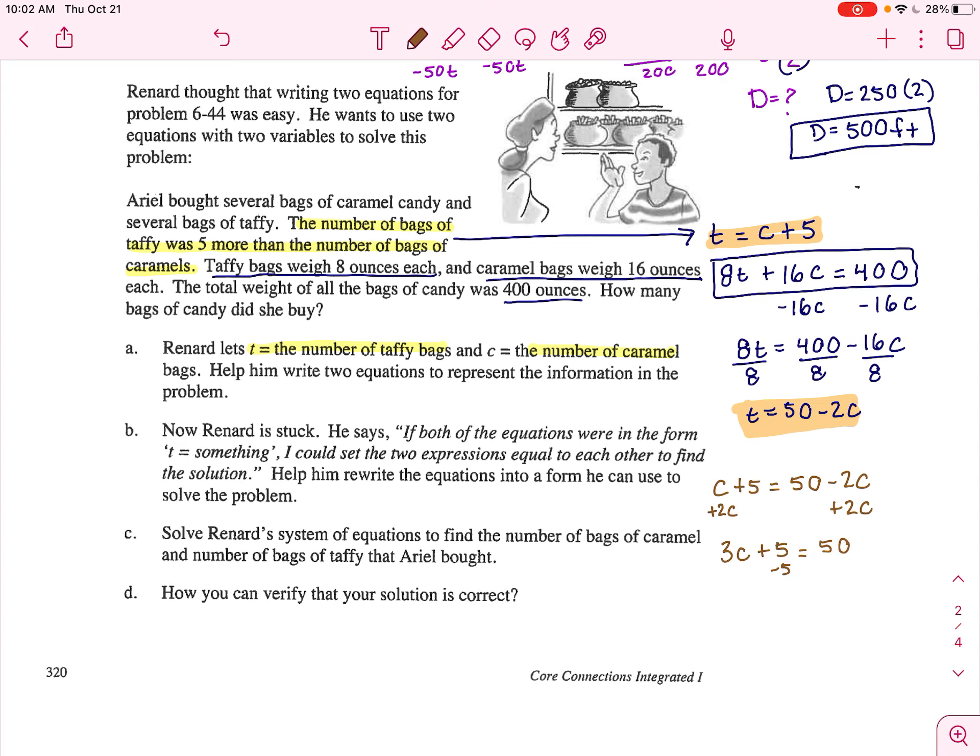I'm going to add 2C on both sides to get 3C plus five equals 50. Subtract 5. 3C equals 45. Divide by 3. C equals 15.